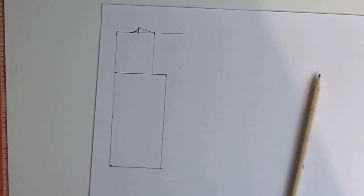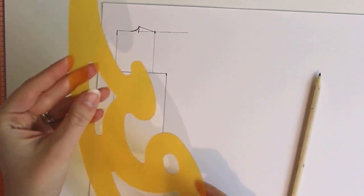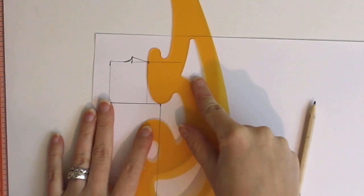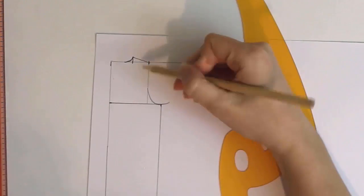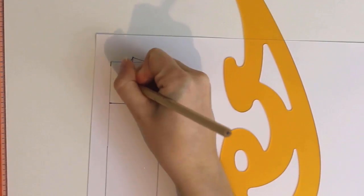Round out the bottom of the sleeve hole using a French curve or just freehand it. Now our back piece is done. I label it and trace the edges with a marker so they'll be easier to follow.